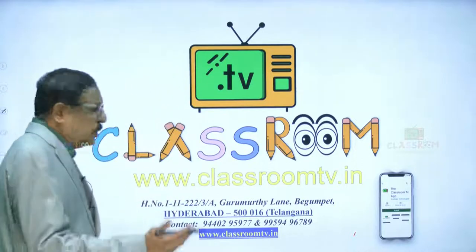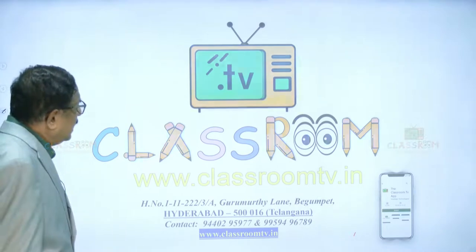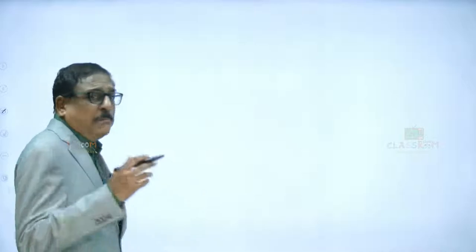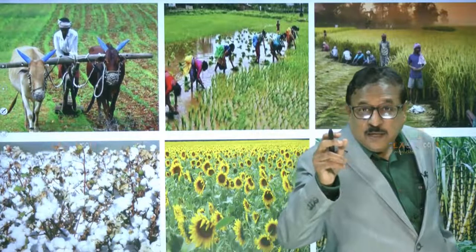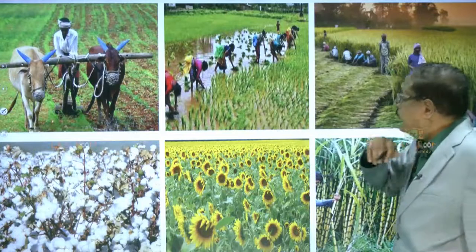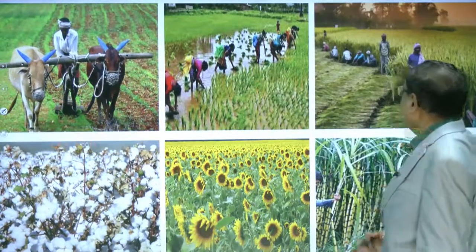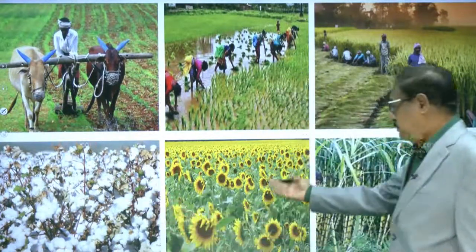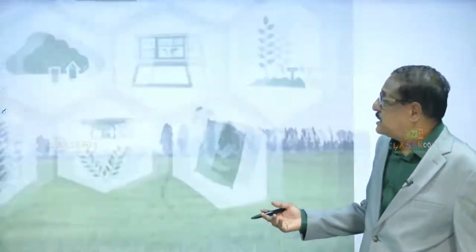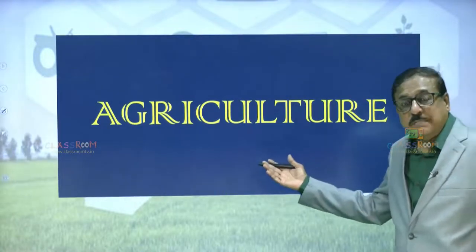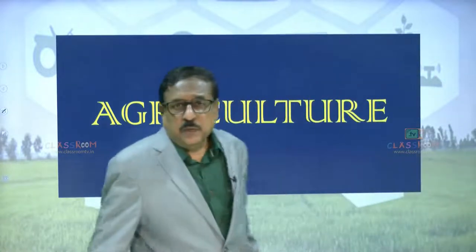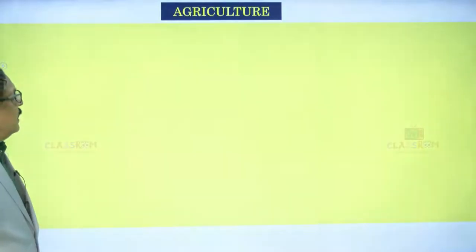Learning on the move was never so easy and was never so affordable. We will now discuss an important lesson. When you look at this picture, the word 'agriculture' immediately strikes you. You can see a farmer plowing, transplantation going on, harvesting here — cotton crop, sunflower, and sugarcane. We are going to discuss the chapter Agriculture, a very important chapter in your social studies lessons.